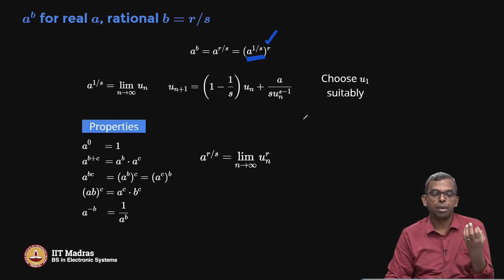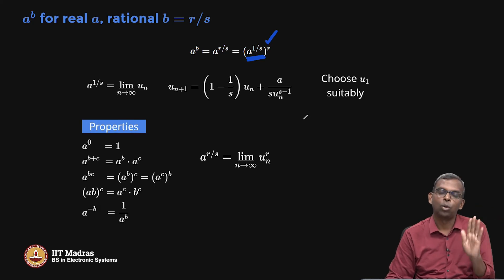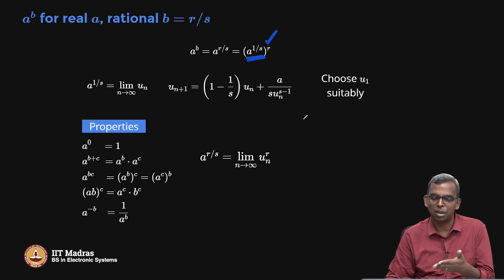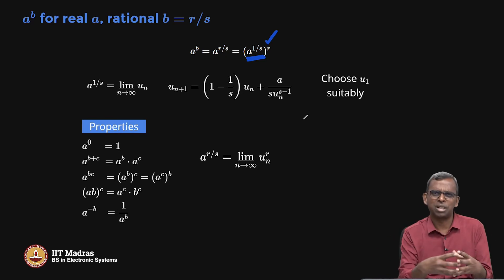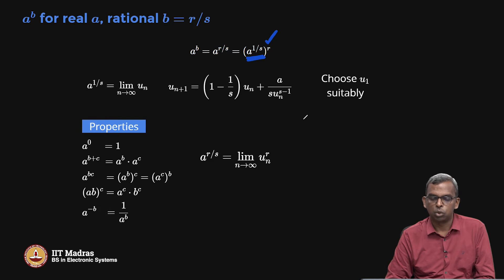Now that we can compute a^b when a is real and b is rational, we can work out all the properties we had previously when b was an integer — they hold for rationals also. Limit interchanges with powers, multiplication, and division very nicely, so all these properties go through very cleanly. So using sequences and limits, we are able to do a^b when a is real and b is rational.